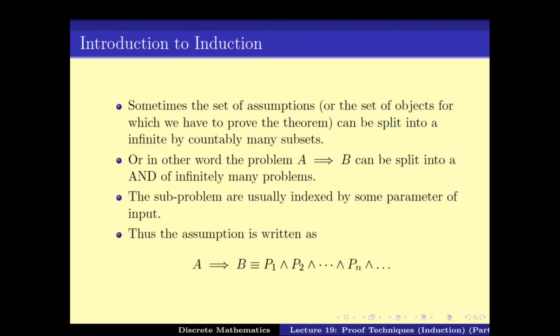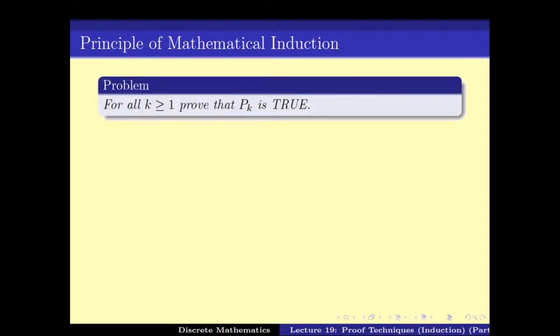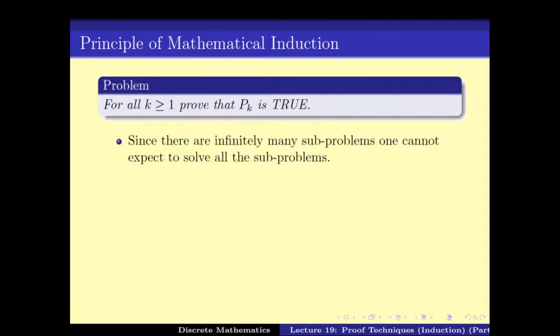Each of these sub-problems are usually indexed by some parameter of the input, and we like the problem A implies B as P1 and P2 and so on. So the problem A implies B becomes: for all k greater than or equal to 1, prove that Pk is true. Unfortunately, since there are infinitely many sub-problems, one cannot expect to solve all the sub-problems individually.